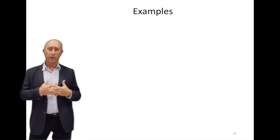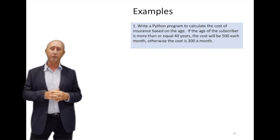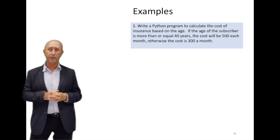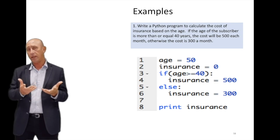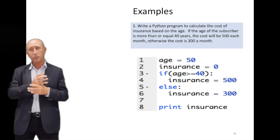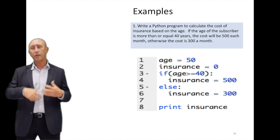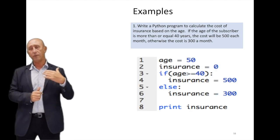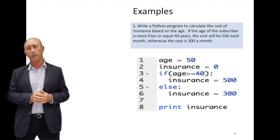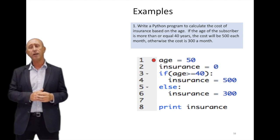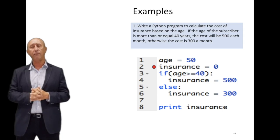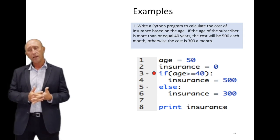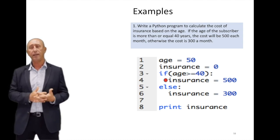Here's an example we'll do together: write a Python program to calculate the cost of insurance based on age. If the subscriber's age is greater than or equal to 40, the cost is $500 per month; otherwise it's $300 per month. We define a variable called 'age' with value 50, and a variable 'insurance' equal to 0. Then: if age is greater than 40, insurance = 500; else insurance = 300. Then we print the insurance.